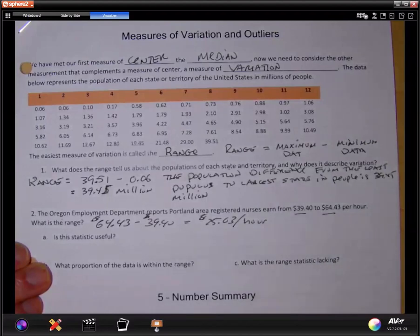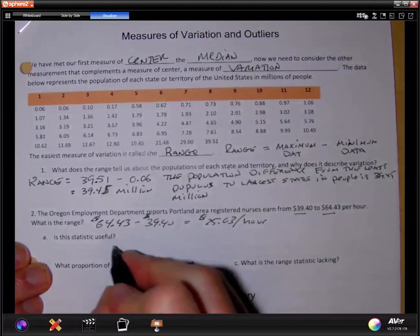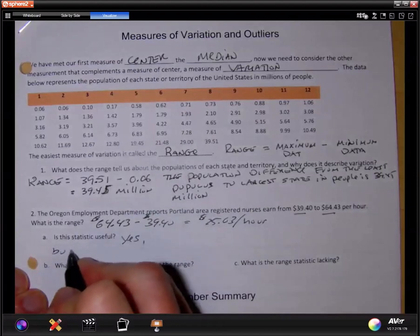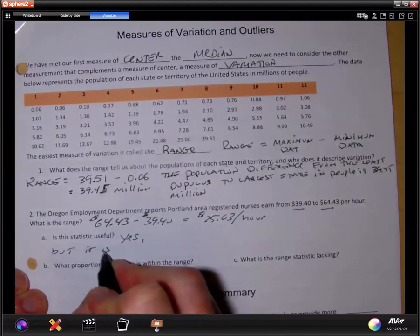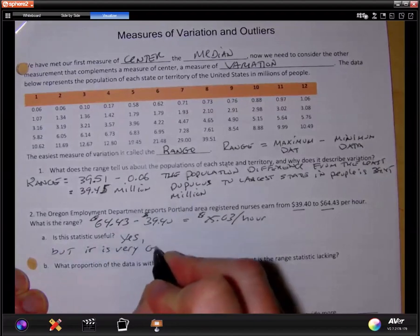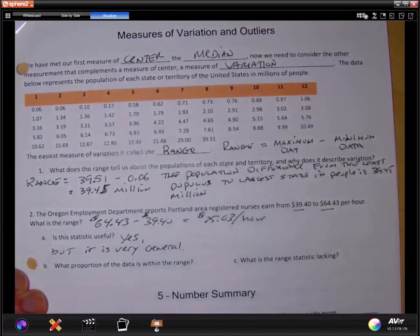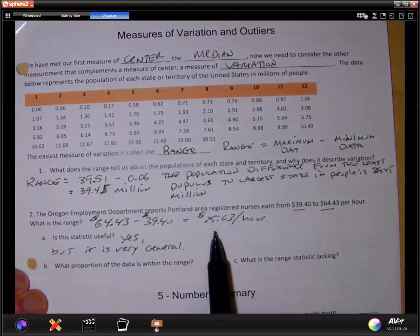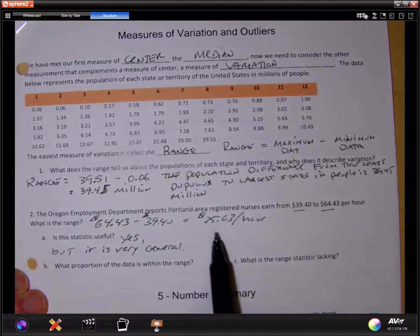And again, is this statistic useful? Yes, but it is very general. It's a nice starting point. If somebody says the range is $25 an hour, what that tells you is there's a lot of variation.